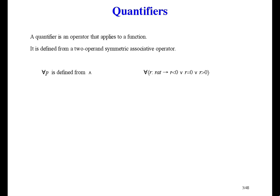Here's an example. For all R in RAT, R is less than 0, or equal to 0, or greater than 0. In this example, the result is true.